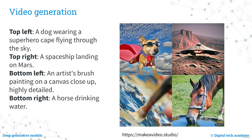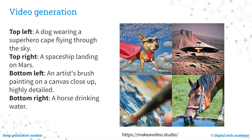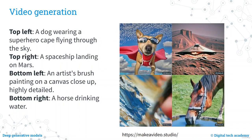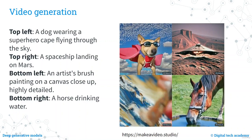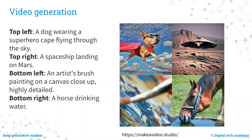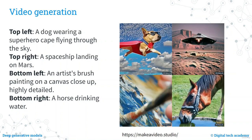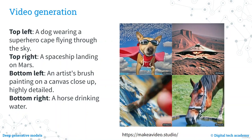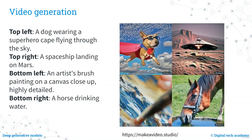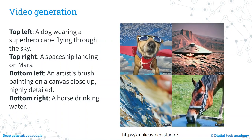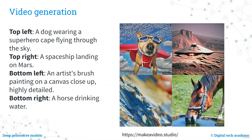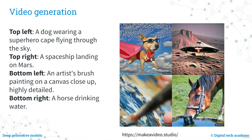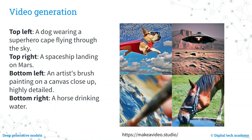So far we've talked mainly about image generation, but generative modelling techniques can also generate video sequences. Some examples from a Meta AI system show text-to-video generation: 'a dog wearing a superhero cape flying through the sky,' 'a spaceship landing on Mars,' 'an artist's brush painting on a canvas close-up, highly detailed,' and 'a horse drinking water.' Video generation is a very exciting topic, and much progress is expected in the near future.